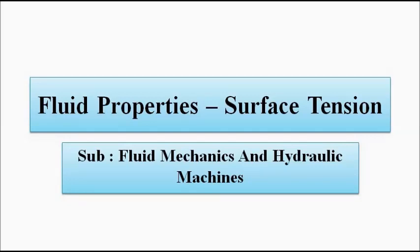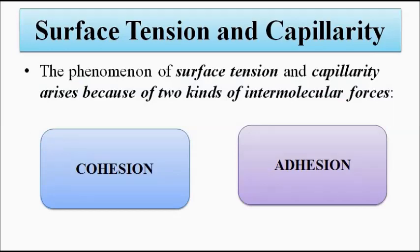Surface tension and capillarity are two fluid properties we will be discussing in the next two videos — surface tension in this video and capillarity in the next. These two phenomena occur because of two kinds of intermolecular forces involving fluids or fluids in contact with other surfaces: one is cohesion, and another one is adhesion.